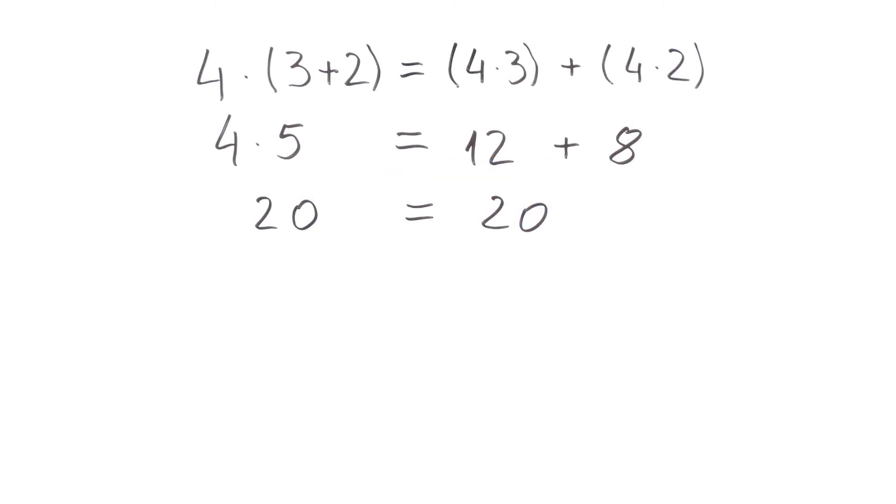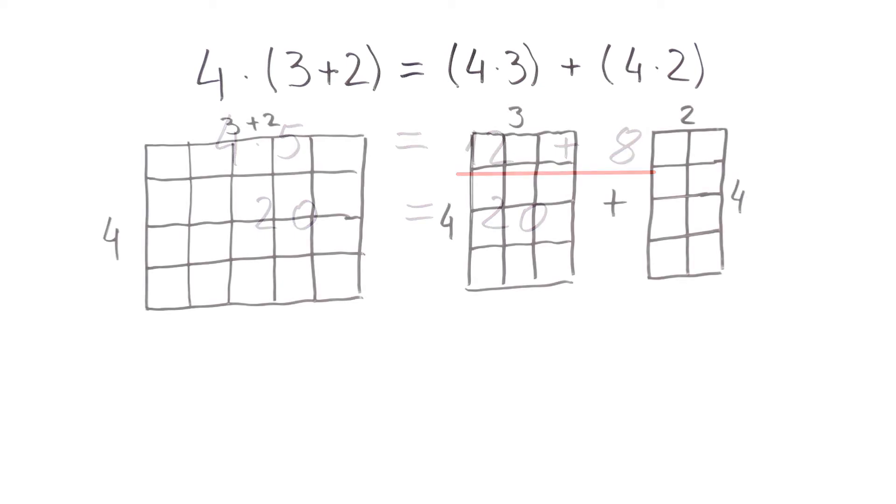We started with an example and established that the equality is true. We also noticed that on the left side was multiplication while on the right side was addition. We then visually represented both sides and concluded that the equality would be true for all natural numbers and not just for 4, 3 and 2.